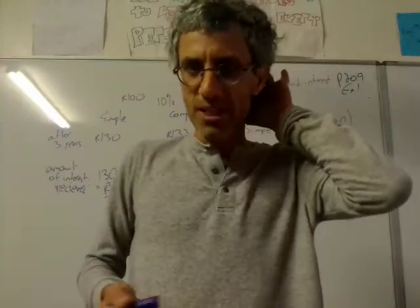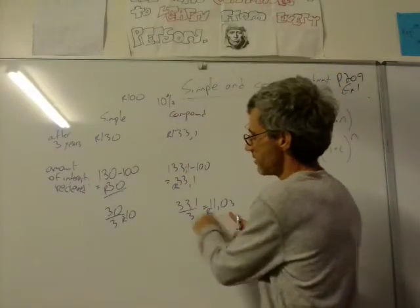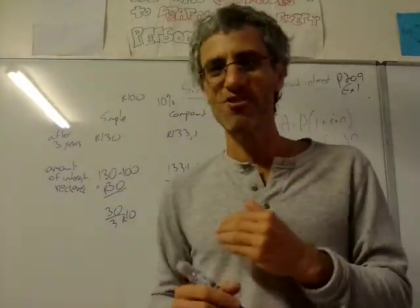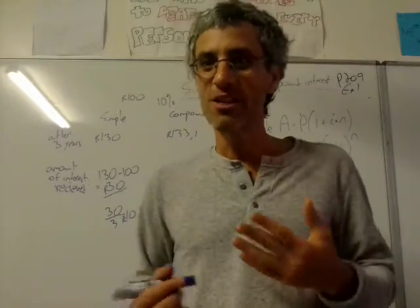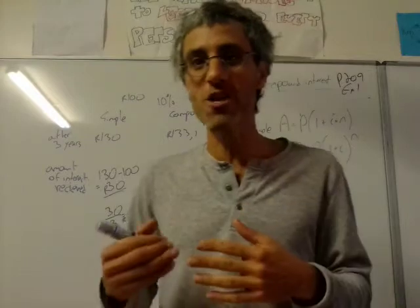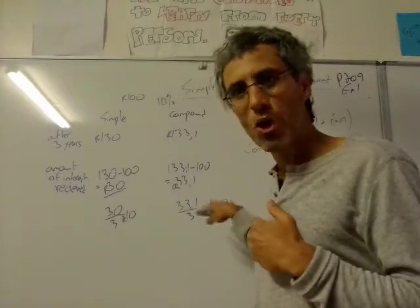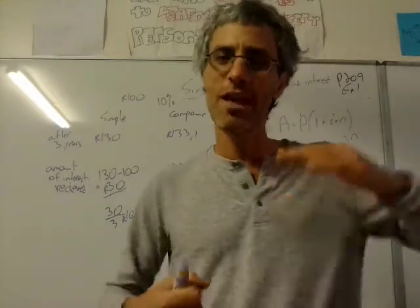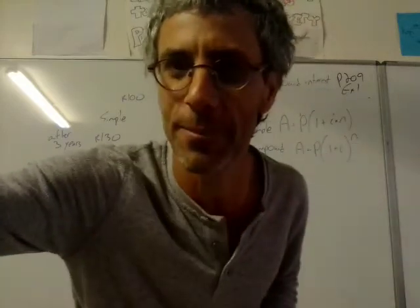So obviously we made more per year than there. Now you're going to watch out with this. It's not true that I made 11 Rand every year, because we saw the first year also made 10 Rand. The second year was a little bit more. The third year I actually made more than 11 Rand, so the interest earned per year in compound interest is really an average, because every year I made more. Let's move on to the next example.